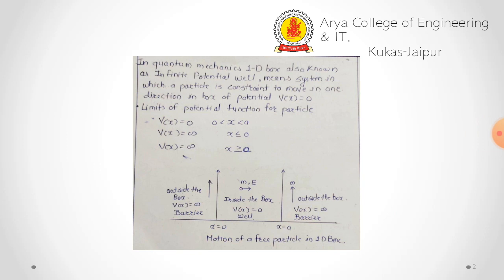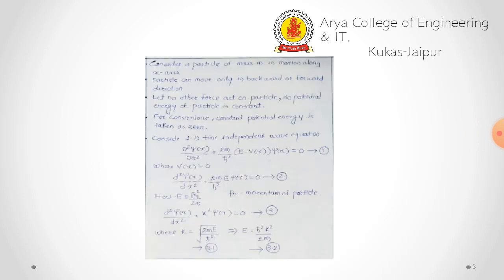Now let's discuss the potential function in all three regions. For the well region, the potential function V(x) is equal to 0, and the limits are 0 less than x less than a. For the barrier areas, V(x) is equal to infinity for x less than or equal to 0 and for x greater than or equal to a.